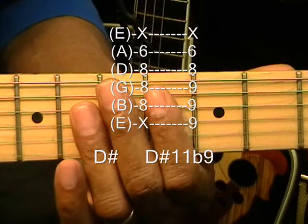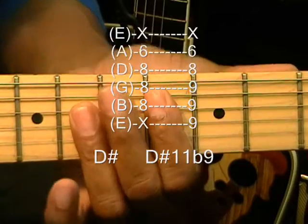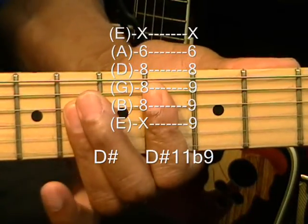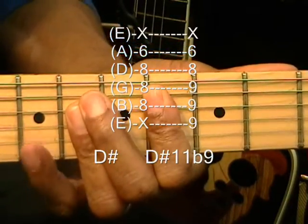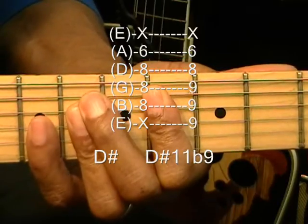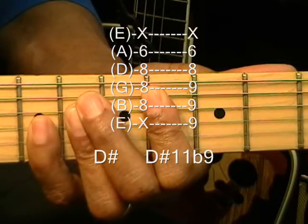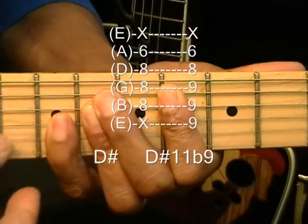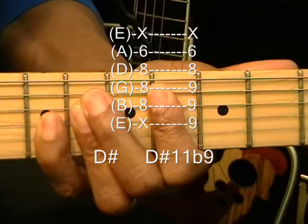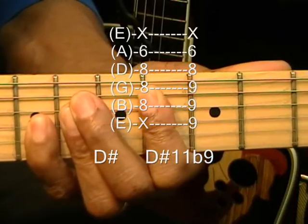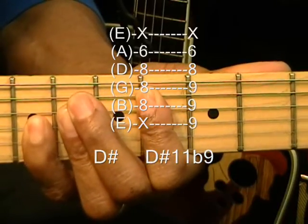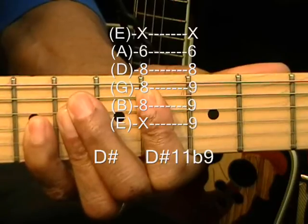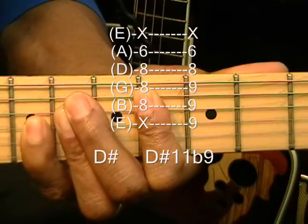We're going to play a D sharp 11 flat 9 by taking our D sharp chord and adding the pinky at the 9th fret to the G, B, and the high E, and strumming that from the A string like that. And that is a strange one. But we're going to be needing that chord.